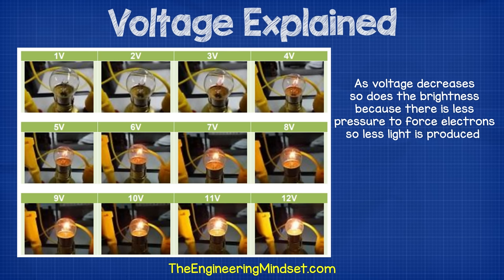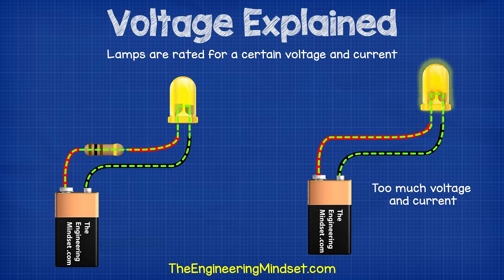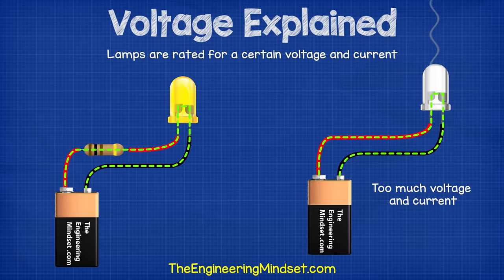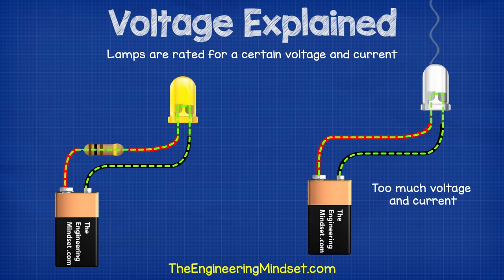If we try to use a lower voltage, the lamp would turn on, but it decreases in brightness as the voltage decreases. That's because there is less pressure to force electrons through it. Less electrons flowing, less light that can be produced. The lamps are only rated for a certain voltage and current. If we use a higher voltage, then the lamp will become brighter, because more electrons are flowing through it. But if we add too much voltage and current, then the lamp will blow, because too many electrons try to pass through at once.